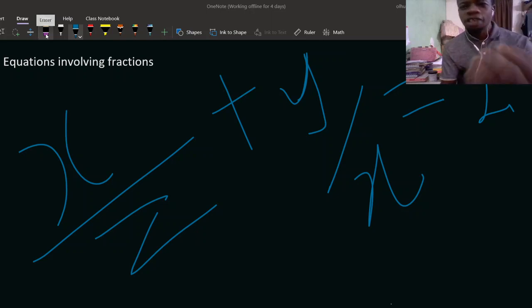So let's speak. When we have equations that involve fractions such that there is an unknown, a variable, how do we go about this?